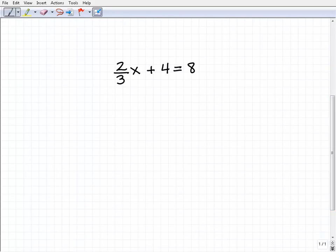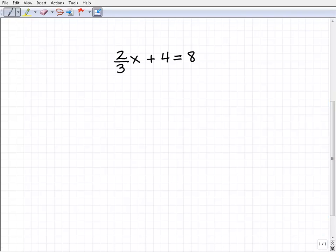Okay, so here it is 2/3x + 4 = 8. So the first thing I'm going to do is I'm going to subtract 4 from both sides of the equation. Now I've kind of highlighted where I want to write that.